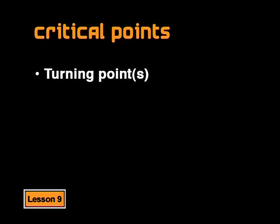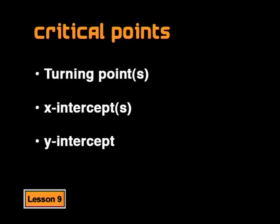Let's get started. In order to draw the graph of the cubic function, there are three sets of critical values that we need to determine. We want to know the coordinates of the turning points of the graph, if they exist, the intersections with the x-axis, and the intersection with the y-axis. I want to start by determining the turning points, because knowing the turning points will help us when it comes to determining the x-intercepts.